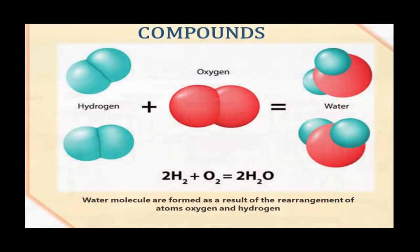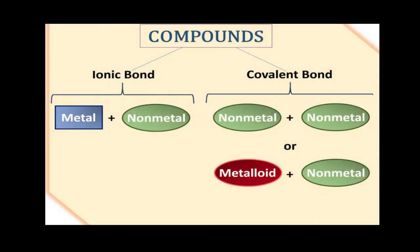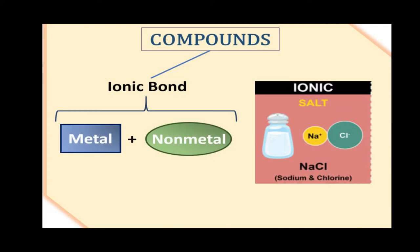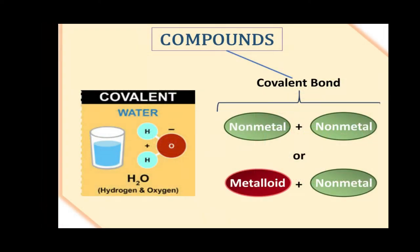Compounds are formed between the chemical combinations of two or more separate elements. There are two common types of compounds based on their chemical bonding characteristics: ionic compounds and covalent compounds.